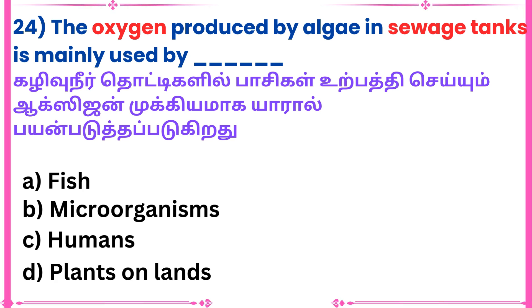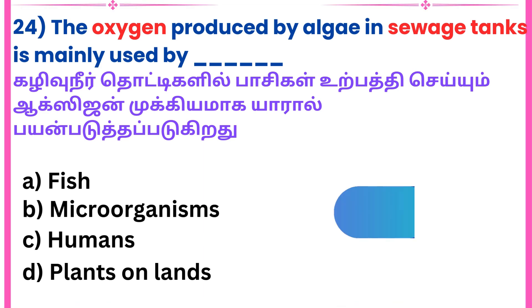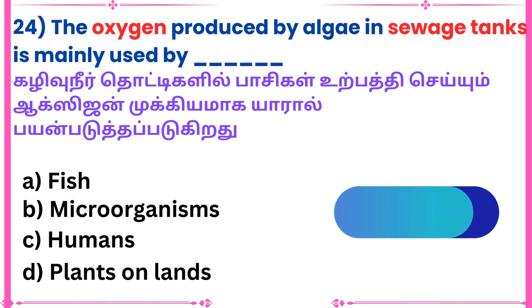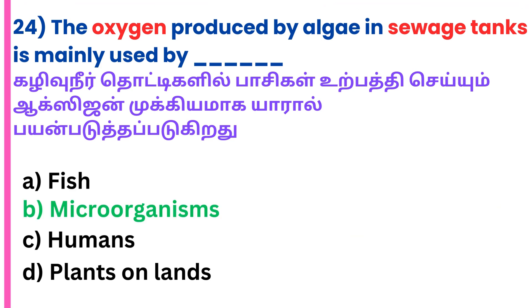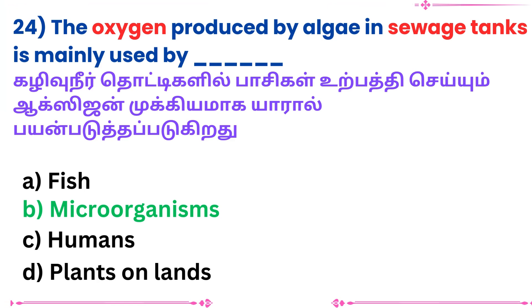24th question: The oxygen produced by algae in sewage tanks is mainly used by what? Answer: Microorganisms.